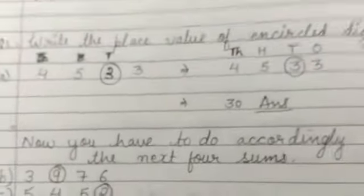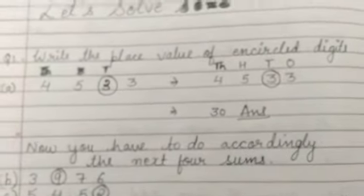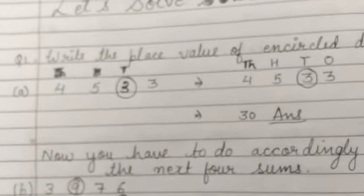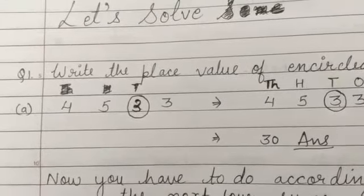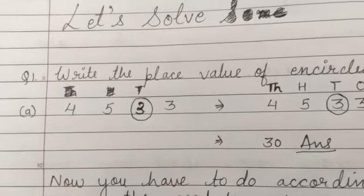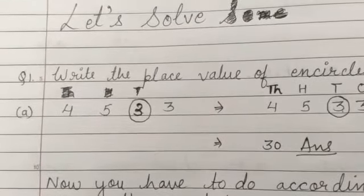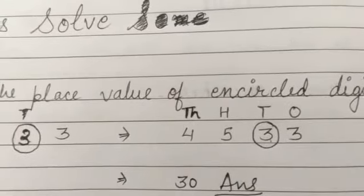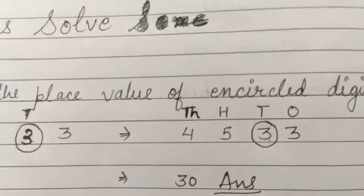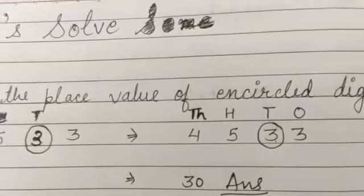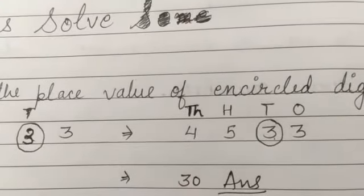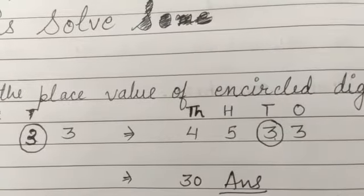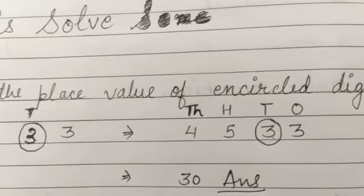The first question is: write the place value of the encircled digit. Our first example number is 4533. We will place the digits under the columns — thousands, hundreds, tens, and ones — and write the values under them. The circled digit here falls under the tens place.